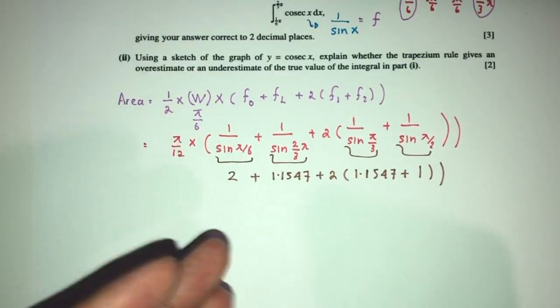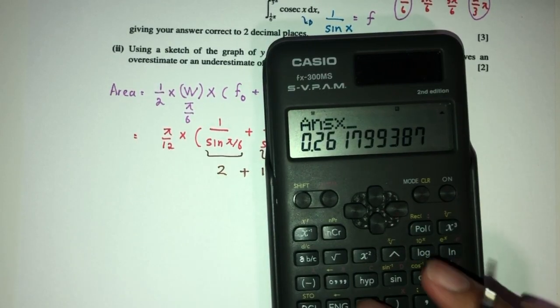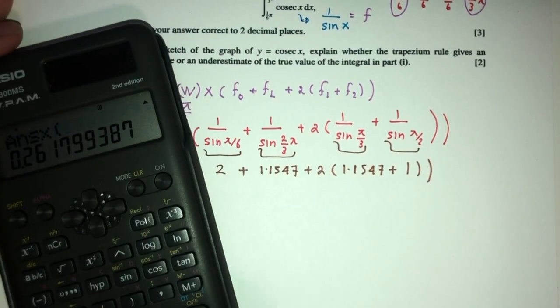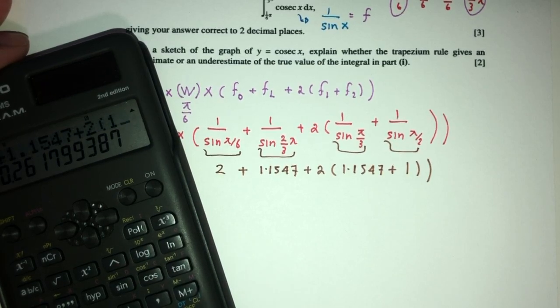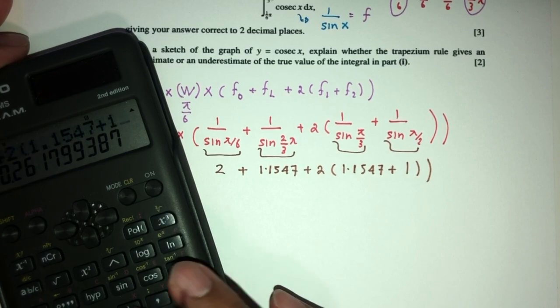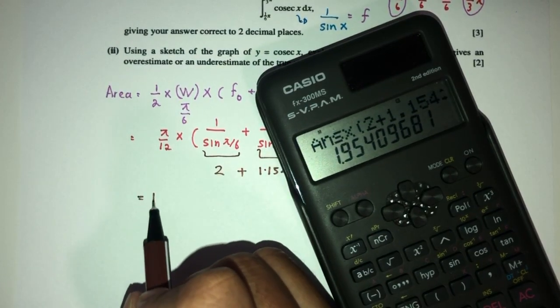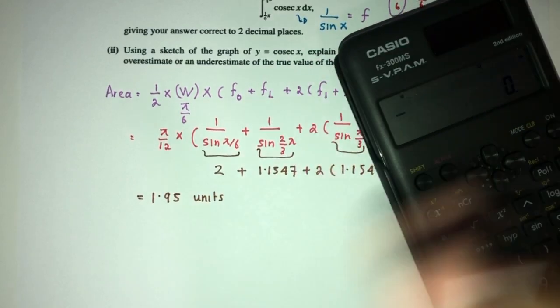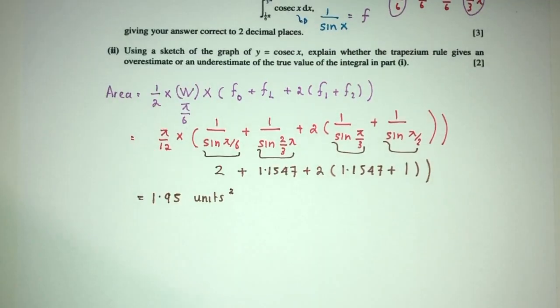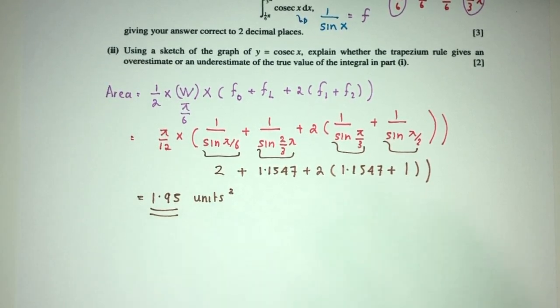Eventually we solve using the formula: π/12 multiplied by the sum of 2 + 1.1547 + 2 times 1.1547 + 1. This will give you the value of 1.95 units squared. The value will be 1.95 correct to 2 decimal places. The main idea is we have to use the formula to find this.